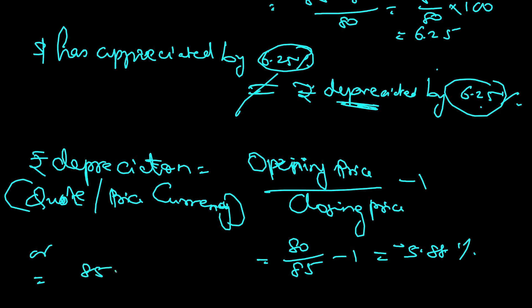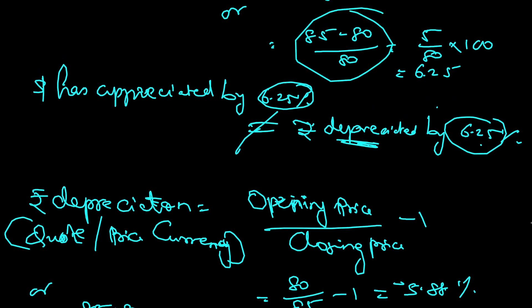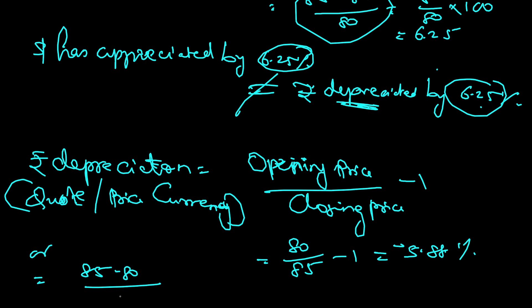I can also calculate it as: 85 minus 80, but this time I keep 85 as the base, then multiply by 100. That gives 5 divided by 85 into 100, which again comes to 5.88 percent. The only thing is it does not give me a minus sign, so I need to be careful — even though 5.88 is shown as a positive number, it is still a depreciation.